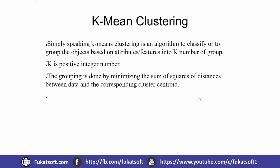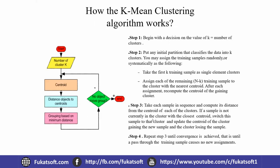K is a positive integer number. The grouping is done by minimizing the sum of squares of distances between data points and the corresponding cluster centroid. Step 1: begin with a decision on the value of k, the number of clusters. Step 2: put any initial partition that classifies the data into k clusters; you may assign training samples randomly.